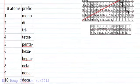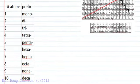And so the prefixes that we're going to use, one through ten, doubt we'll ever use seven, eight, nine, and ten, but we might. Mono, di, tri, tetra, penta, hexa, hepta, octa, nona, and deca.